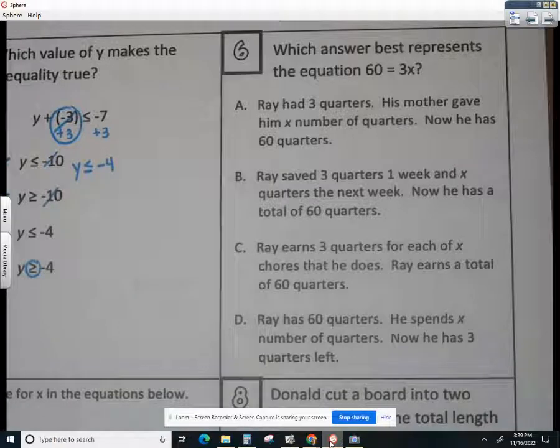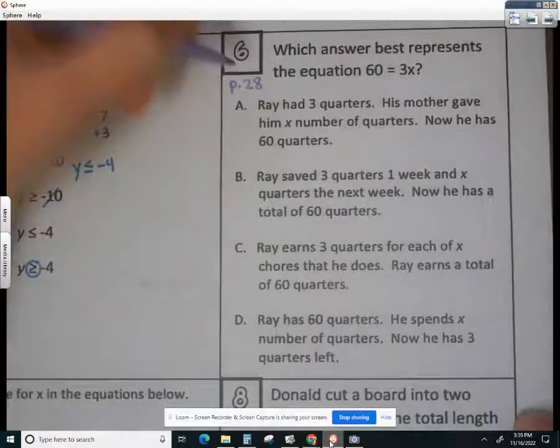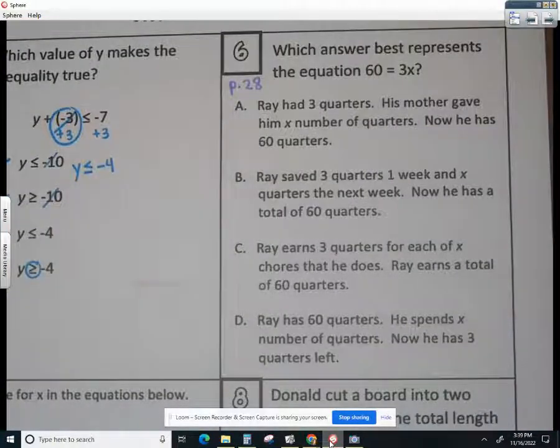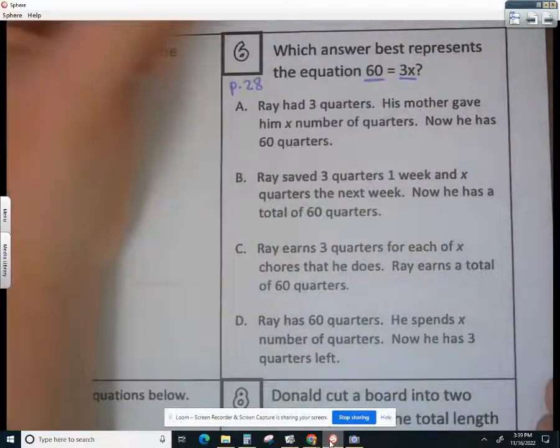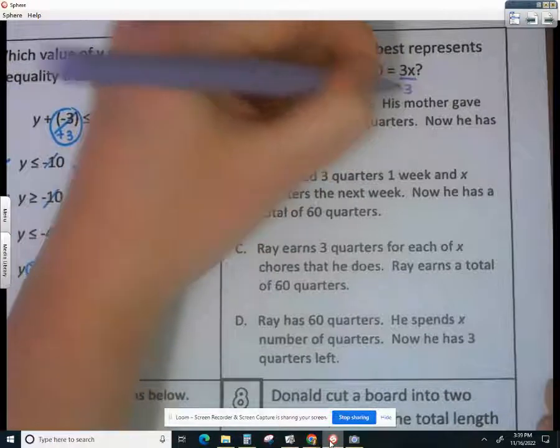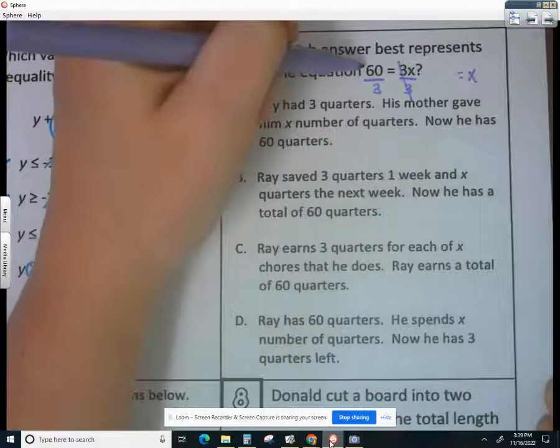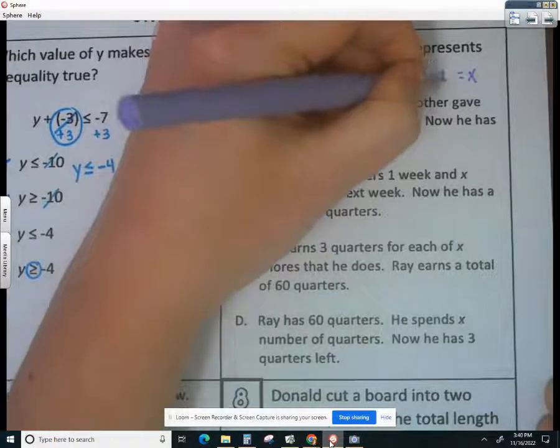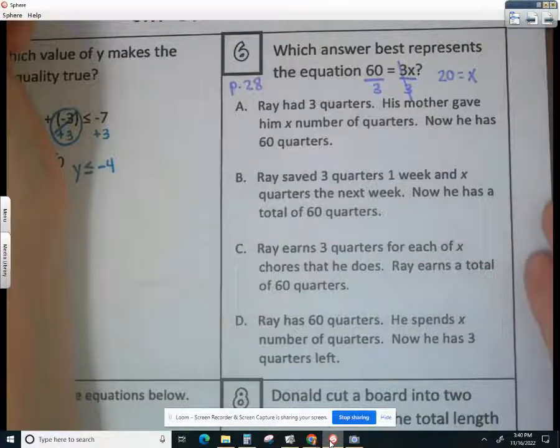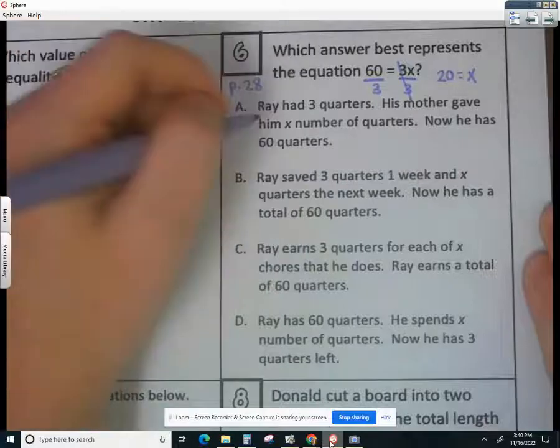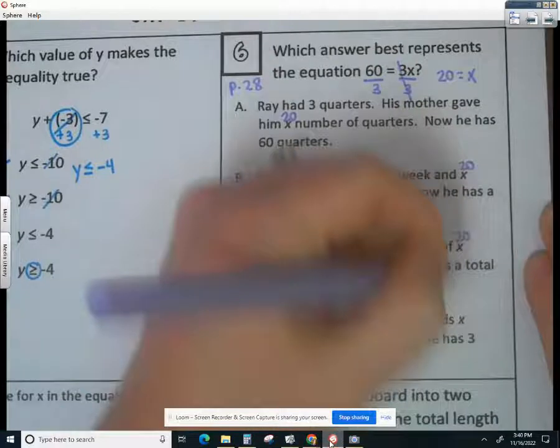Question number 6 is also found on page 28, because it's another real-world equation. Now, the best thing is before you actually go down and look at your answer choices, you should solve the equation. So if we see multiplication over here, we want to go ahead and divide both sides by 3. That's going to leave us with x by itself on the right-hand side. And then 60 divided by 3 would give me 20. So I like to know, even though the question's not asking what x equals, but if I know what x equals, then anytime I see an x, I'm just going to plug in 20, because that's only going to work in one of them.